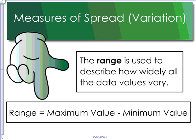So our last measure of central tendency that we're going to be talking about today is the range. The range is used to describe how widely all the data values vary. It's the maximum value in a list of data subtracted by the smallest one.